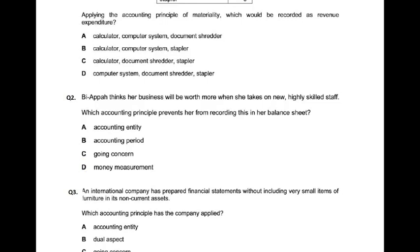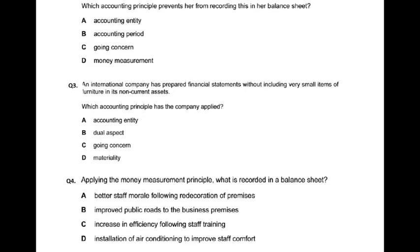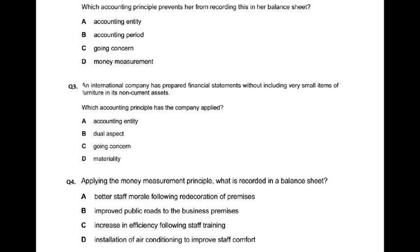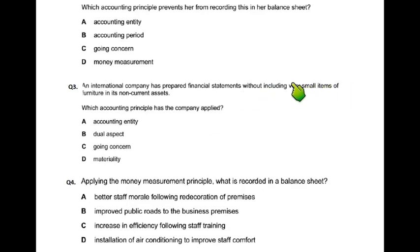We are going to discuss more about question three. In this question, an international company has prepared financial statements without including very small items of furniture in its non-current assets. You may have guessed that small assets are not to be put in the asset account, but to be put in the expense.